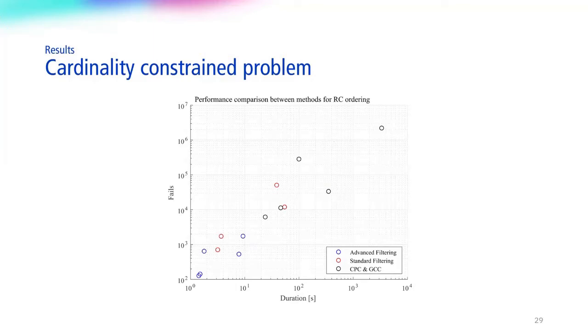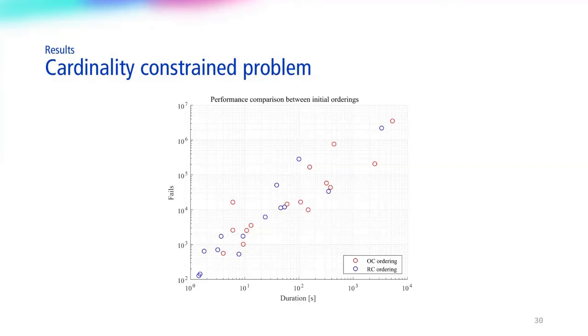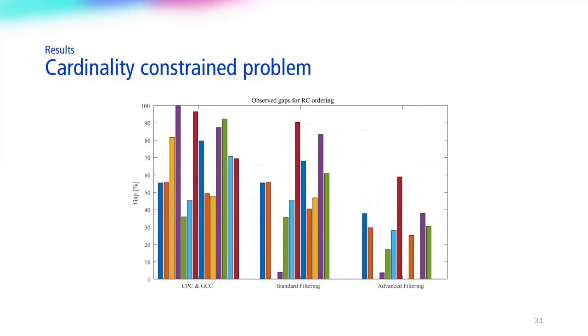The same trend is observed here with the RC ordering. Between RC and OC, we notice that RC is overall faster, with data points shifted toward the bottom-left corner. However, it is important to remember that OC isn't definitively inferior, as it produced substantially better results in some limited instances like breast tissue. Gaps paint a similar picture as well, where we observe lower gaps overall for the advanced method.